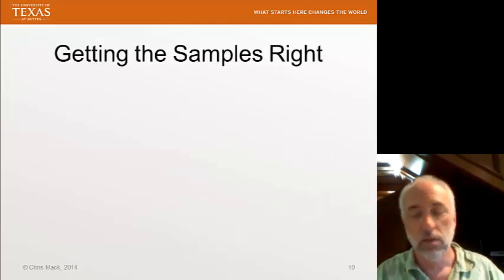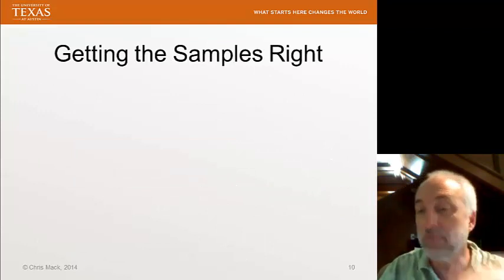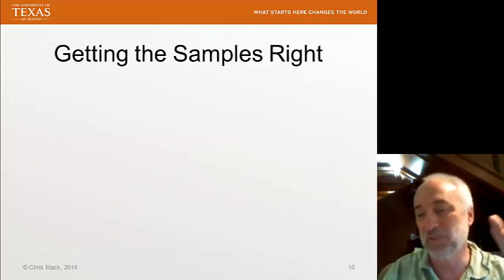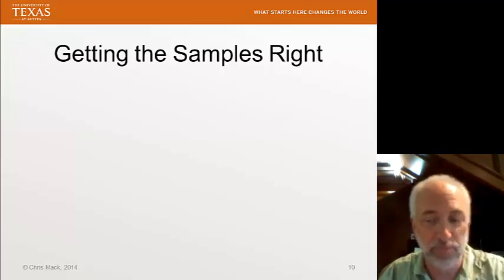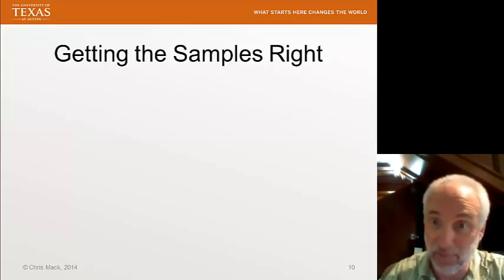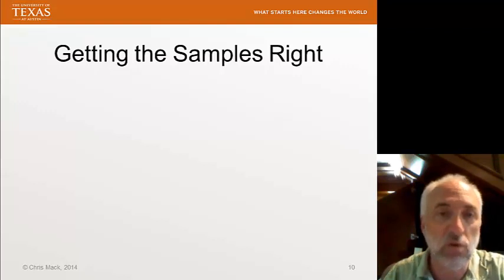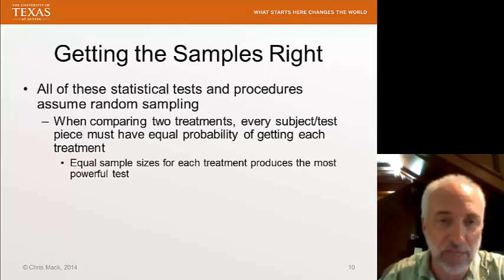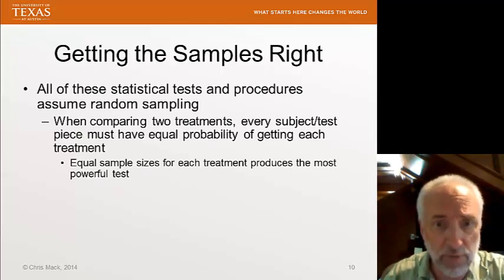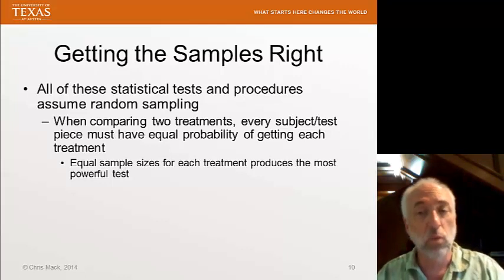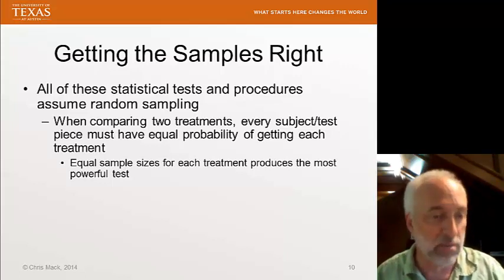Now, all of these tests and everything we've talked about in statistics basically assumes that we do a good job of sampling. And there's lots of ways to get the sampling wrong. So let's talk about what is required to do a good job of sampling. Well, first of all, if we are comparing two treatments, we have to make sure that we have random samples.